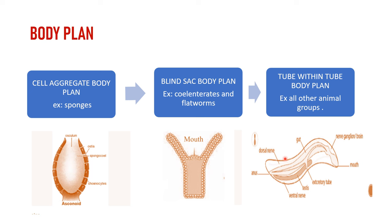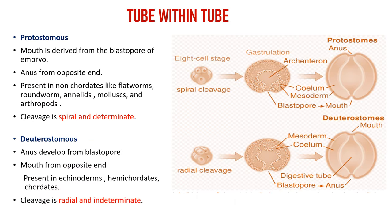The tube within tube body plan is further divided into two types — protostomes and deuterostomes — which we will discuss one by one.